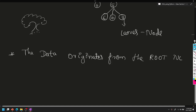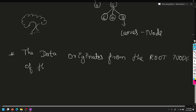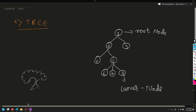The data originates from the root node. Root node of the tree. So next definition: every node in the tree that precedes another node is called as the parent node. The leaf node is this one.